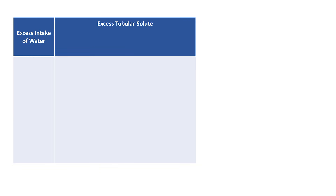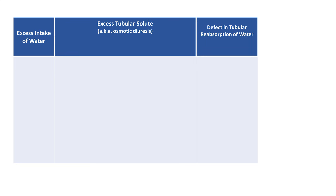The best diagnostic framework for polyuria categorizes etiologies based on their physiologic mechanism. The main categories are: too much water, too much solute delivered to the renal tubules resulting in an osmotic diuresis, or a defect in the tubular reabsorption of water, also known as diabetes insipidus.